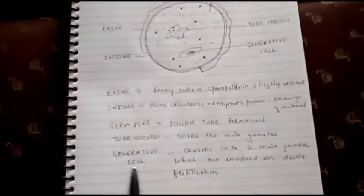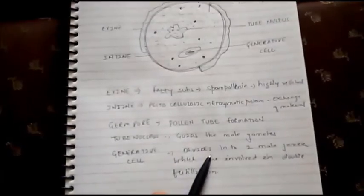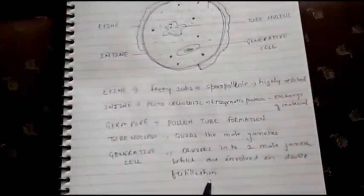Then there is generative cell which, after the pollen tube formation, divides into two male gametes which are involved in double fertilization.